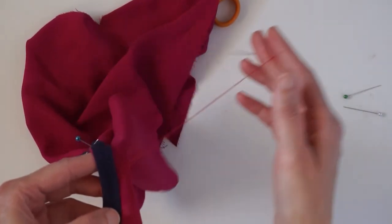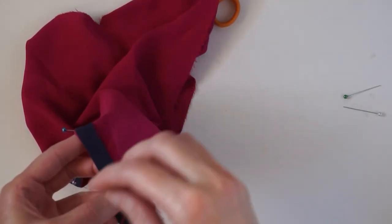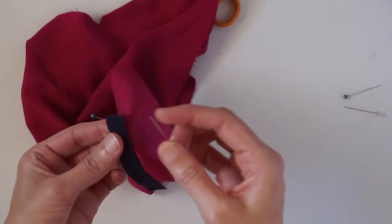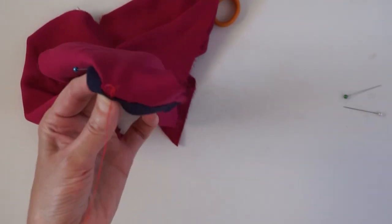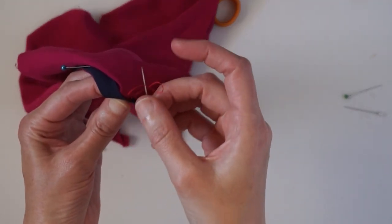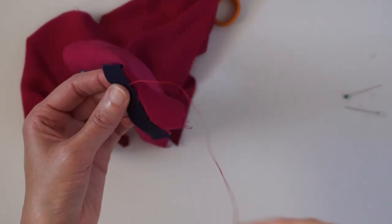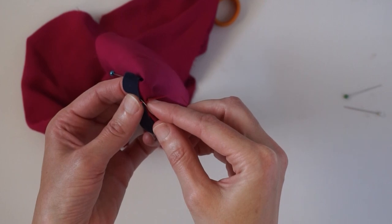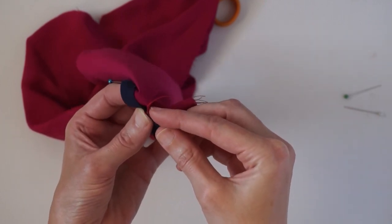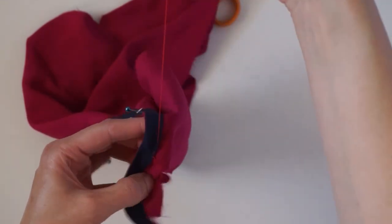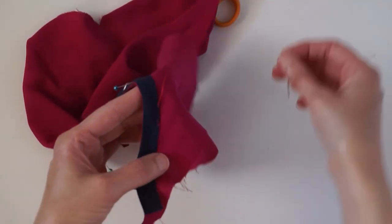When you get to the end of your thread, you're going to finish it the same way you started by just taking a loop through the facing and then tying it in a knot. Then you can bury the thread into the facing. Just run the thread through the facing and trim off any excess.